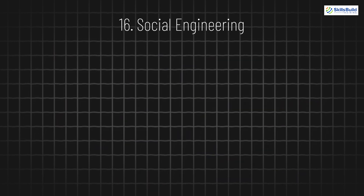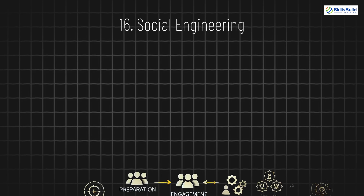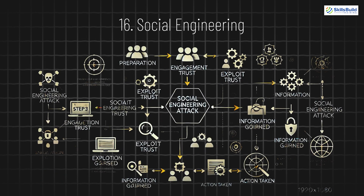16. Social Engineering. Social engineering involves manipulating people into divulging sensitive information or performing actions they shouldn't. It plays on human psychology, creating urgency or pretending to be someone the victim trusts.